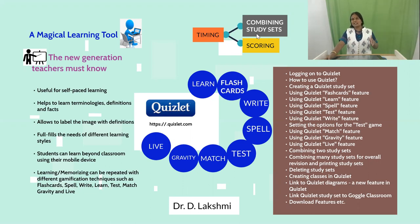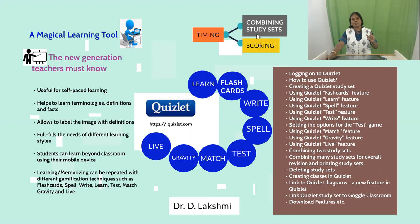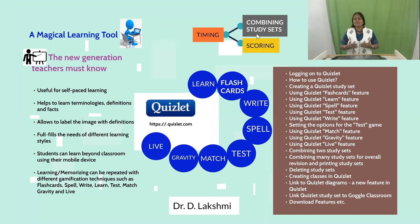Here in our system, it is useful for English learning as well as many facts and terminologies learning also. If we consider any subject or course, across the entire course, 50 to 100 terminologies will be revolving. Being a student, it is lightweight to learn and it reduces cognitive load.